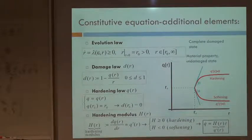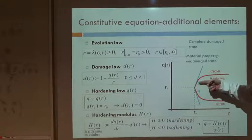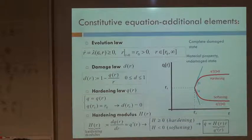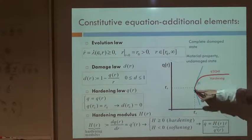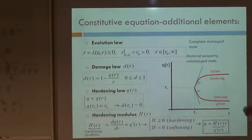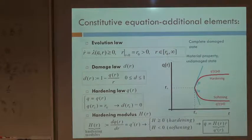That is some variable that we take such that if the derivative of Q with respect to R is positive, we have hardening. As soon as this derivative is negative, we have softening. That's one of our ways of modeling material. If we take this curve with a positive derivative — even constant — all the time, then we model a material that only hardens. If that is negative, the material softens.